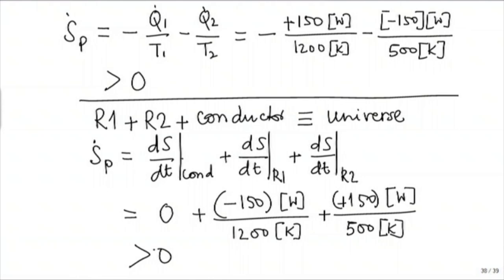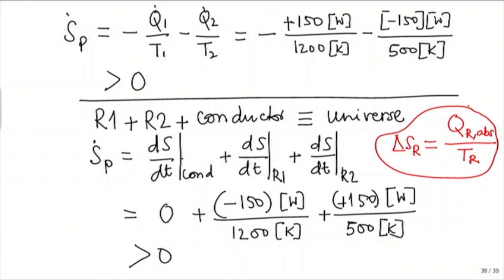The key idea used here is: the entropy change of a reservoir is Q absorbed by the reservoir divided by the temperature of that reservoir. So for a reservoir, we need to know two things: its fixed temperature T_r, and the heat Q_r it absorbs or rejects. The entropy of that reservoir will change according to the formula delta S_r equals Q absorbed divided by the temperature of the reservoir.